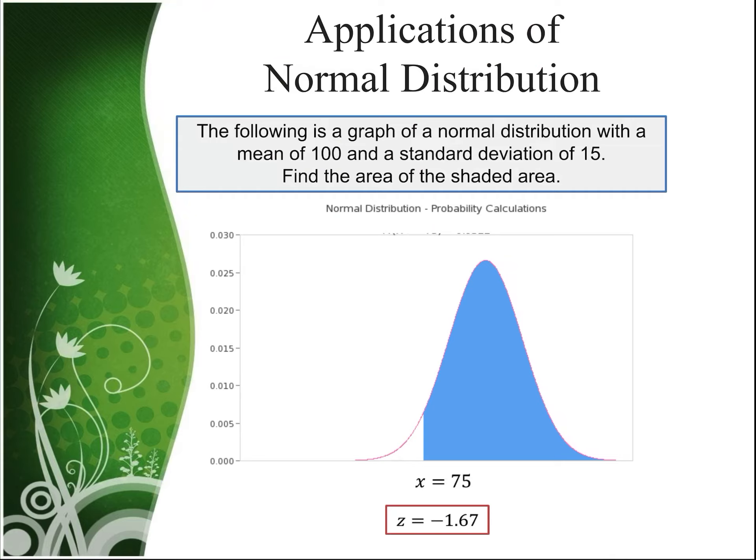In this example, we wanted the area to the right. So we just found the area to the left, this area right here, is .0475. That means that the area to the right is 1 minus .0475, or .9525.